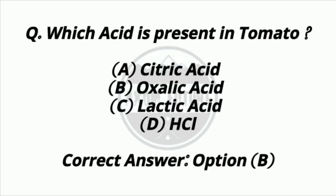Question 19. Which acid is present in tomato? Option A: Citric acid. Option B: Oxalic acid. Option C: Lactic acid. Option D: HCl. Answer: Option B — Oxalic acid.